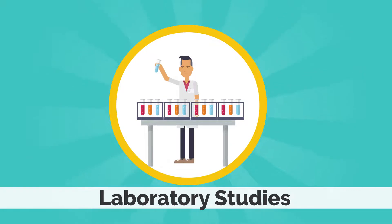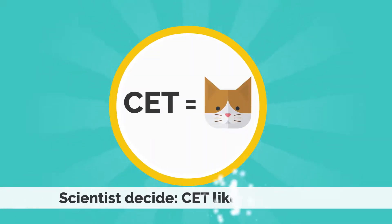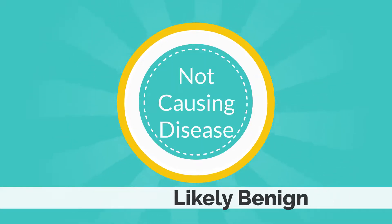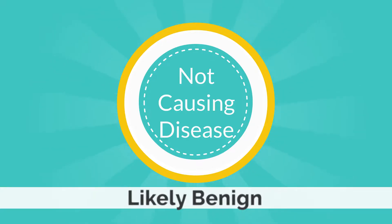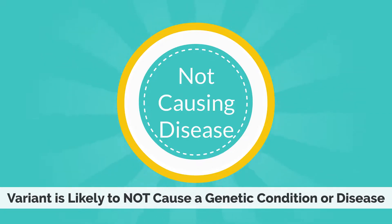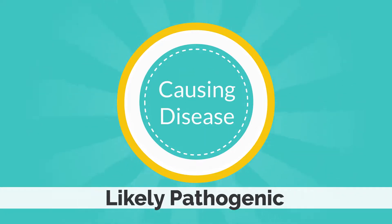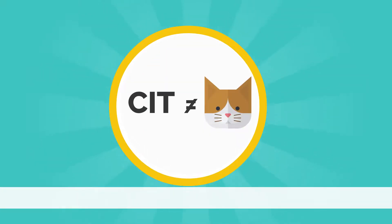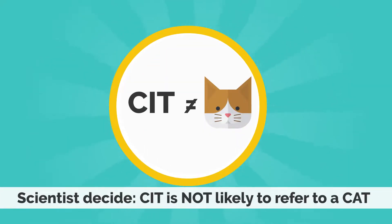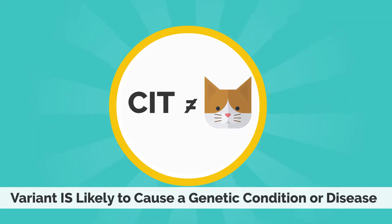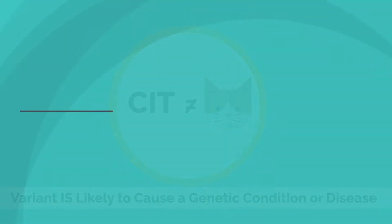After many studies are done in the lab, scientists may know more about certain variants. For example, scientists might decide that C-E-T most likely means "cat" in DNA. This means that the variant is likely benign, or likely to not cause a genetic condition or disease. Other variants might be reclassified as likely pathogenic — for example, scientists might decide that C-I-T is not likely to refer to a cat, meaning that the variant is likely to cause a genetic condition or disease.